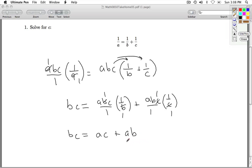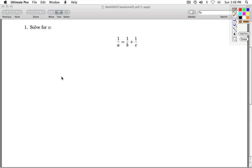So now I have B, C equals A, C plus A, B. The highest power of C here is C to the first power. I'm asked to solve for C. So I'm going to get all the C on one side and everything else on the other. I'm going to subtract A, C from both sides. So I get B, C minus A, C equals A, B.